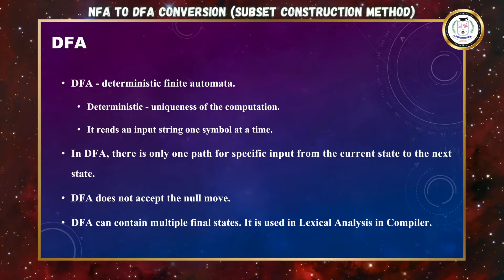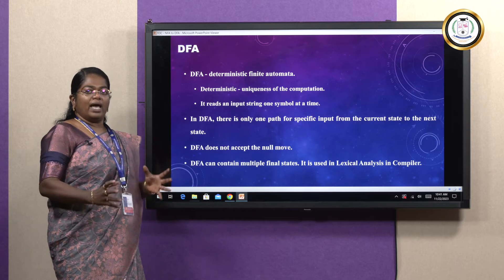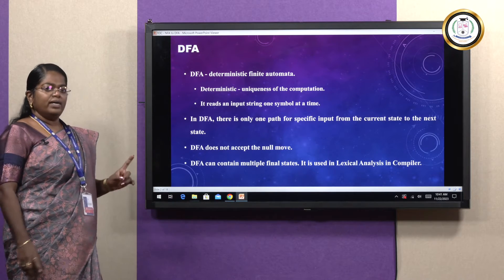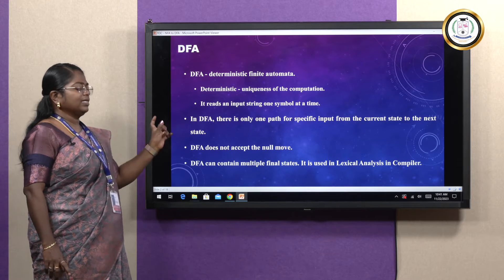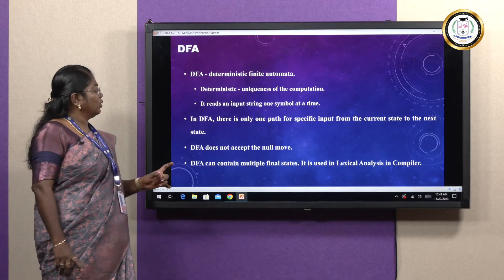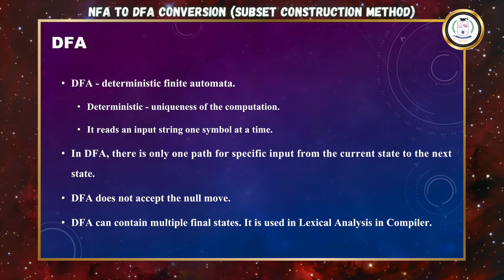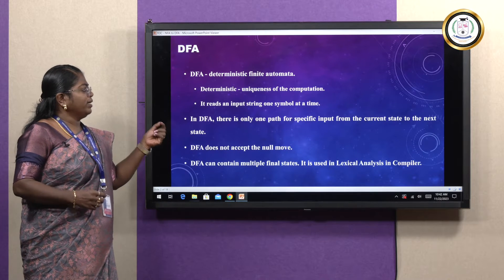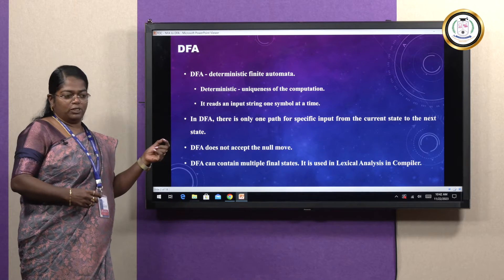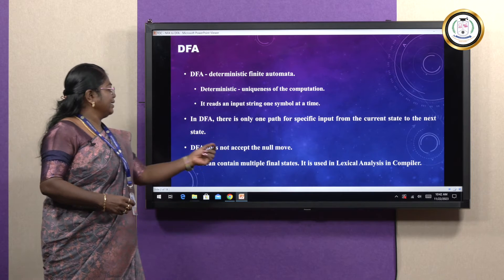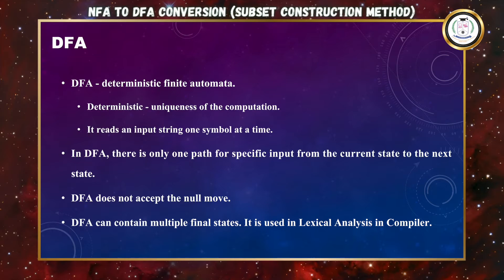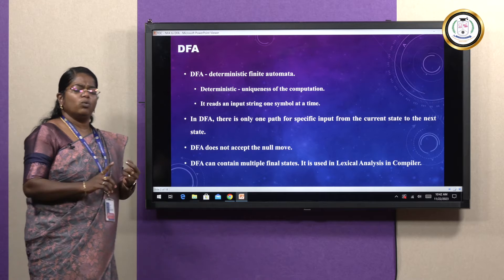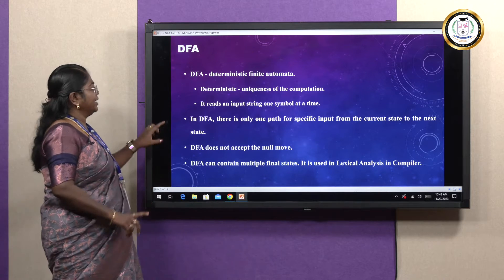DFA means Deterministic Finite Automata. Deterministic means determinism — it is known as uniqueness. Here it reads one input string at a time, taking one character at a time and processing it. DFA means only one path from one state to another state. With one input symbol we will be able to move to only one next state. This is very important — DFA will not accept the null move. We can have only one start state and multiple final states.